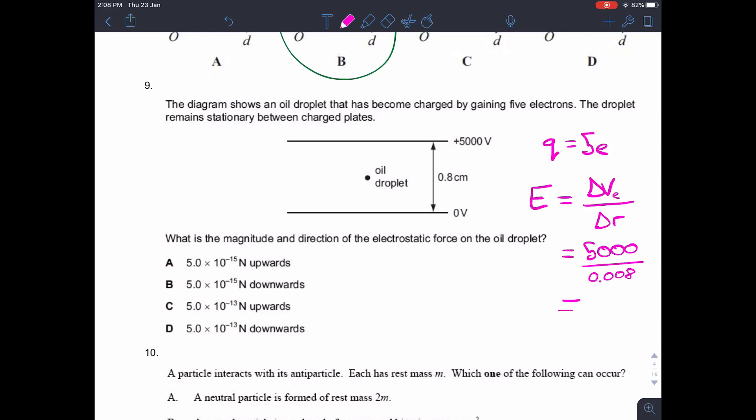So that gives you an electric field strength. Now, your electric field strength can also tell you the force, because force is electric field strength times the charge on the object. So the electric force is equal to 5000 divided by 0.008, which is your electric field strength here. And multiply that by the charge, which is 5 times 1.6 times 10 to the minus 19. And that gives you a force of 5 times 10 to the minus 13 newtons. So we know that it's either C or D.